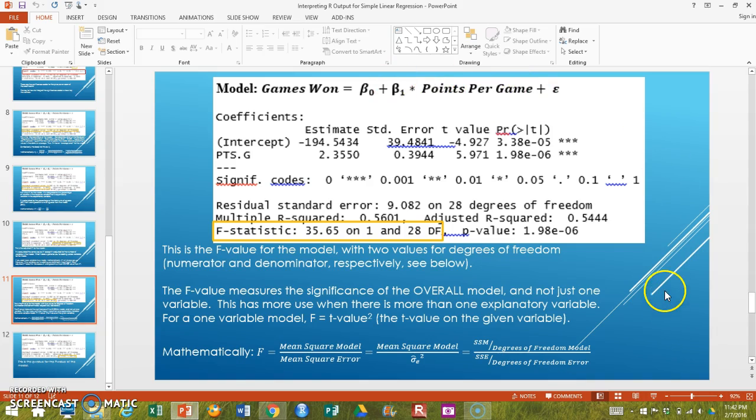In multiple regression, this situation will change. Then we will be able to distinguish between statistical significance of each variable versus the statistical significance of the overall model. Just remember F is the overall model and you'll be in good shape with that.